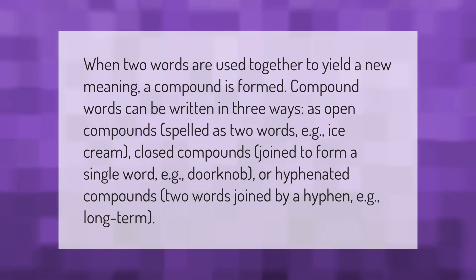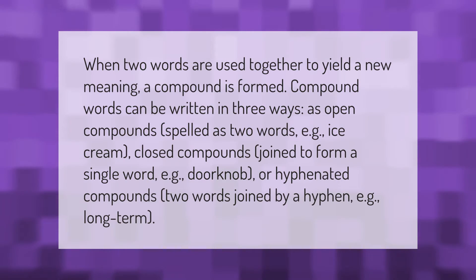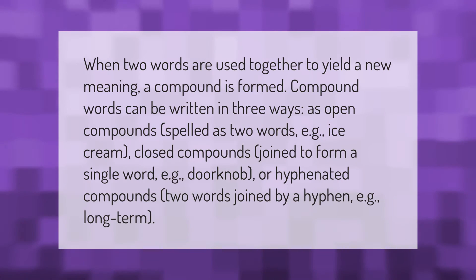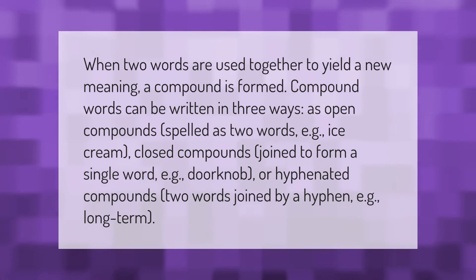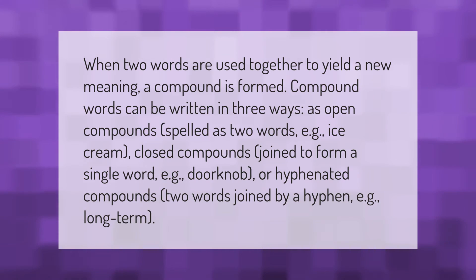When two words are used together to yield a new meaning, a compound is formed. Compound words can be written in three ways: as open compounds, spelled as two words (e.g., ice cream); closed compounds, joined to form a single word (e.g., doorknob); or hyphenated compounds, two words joined by a hyphen (e.g., long-term).